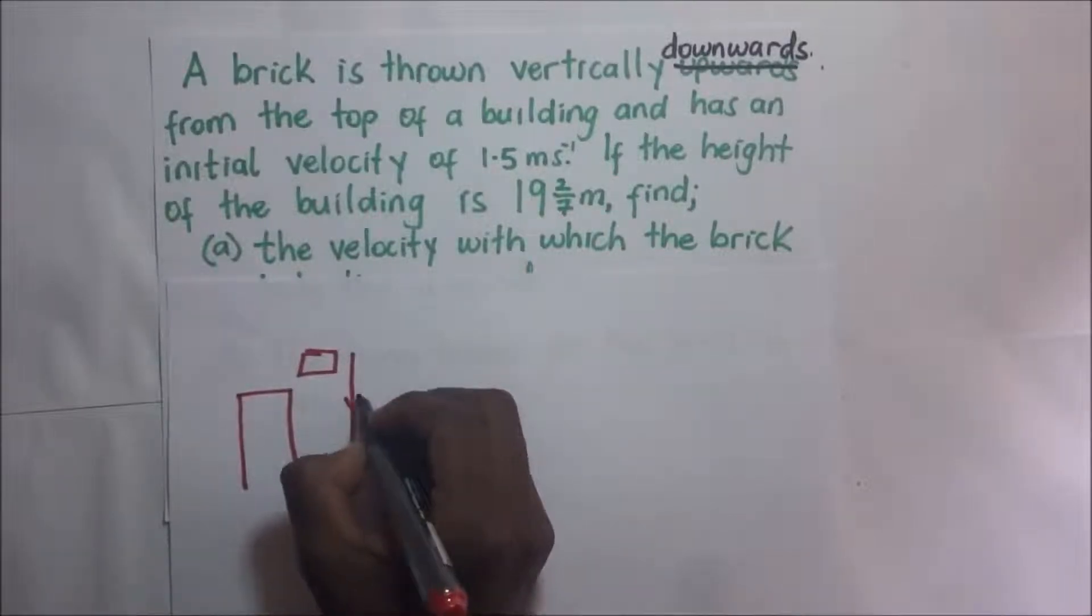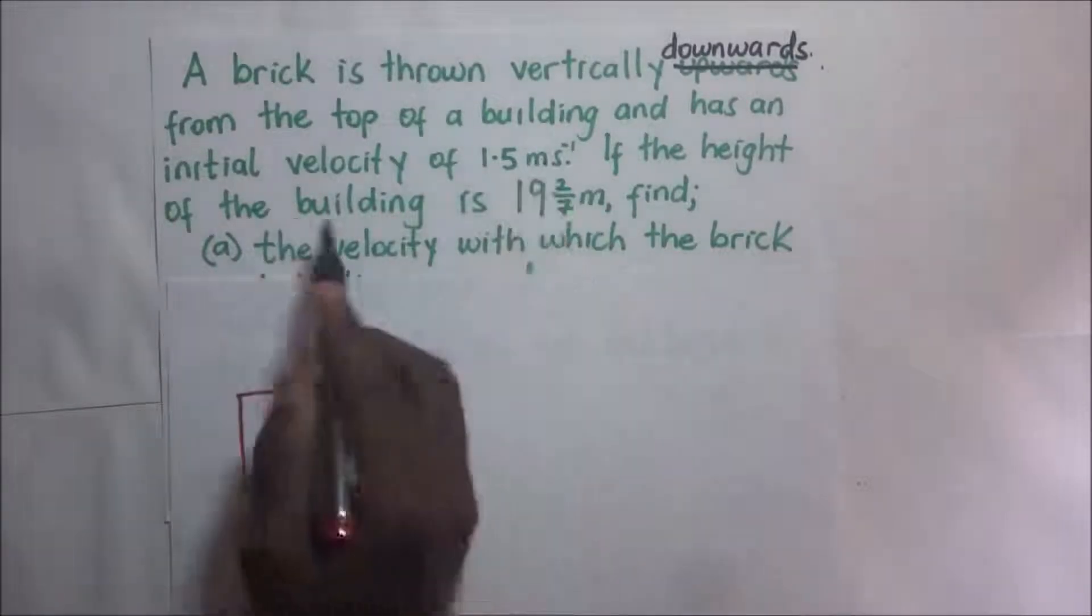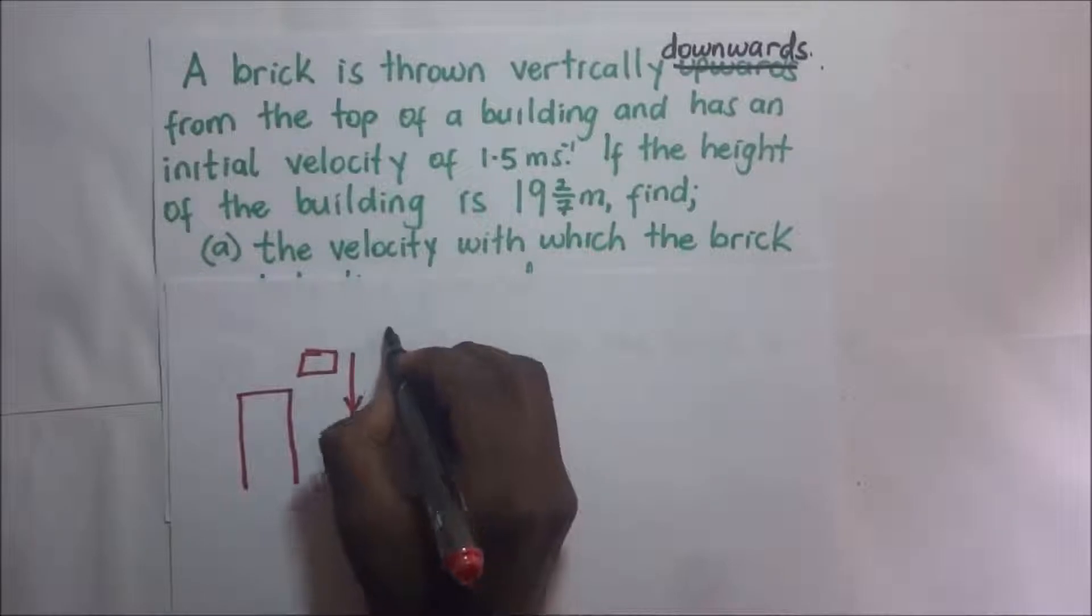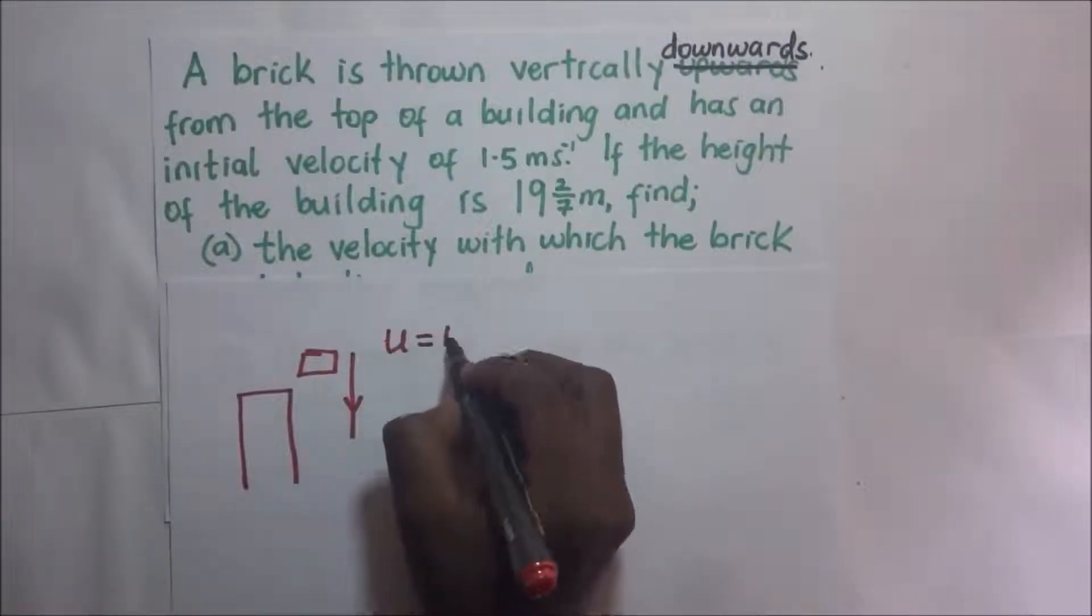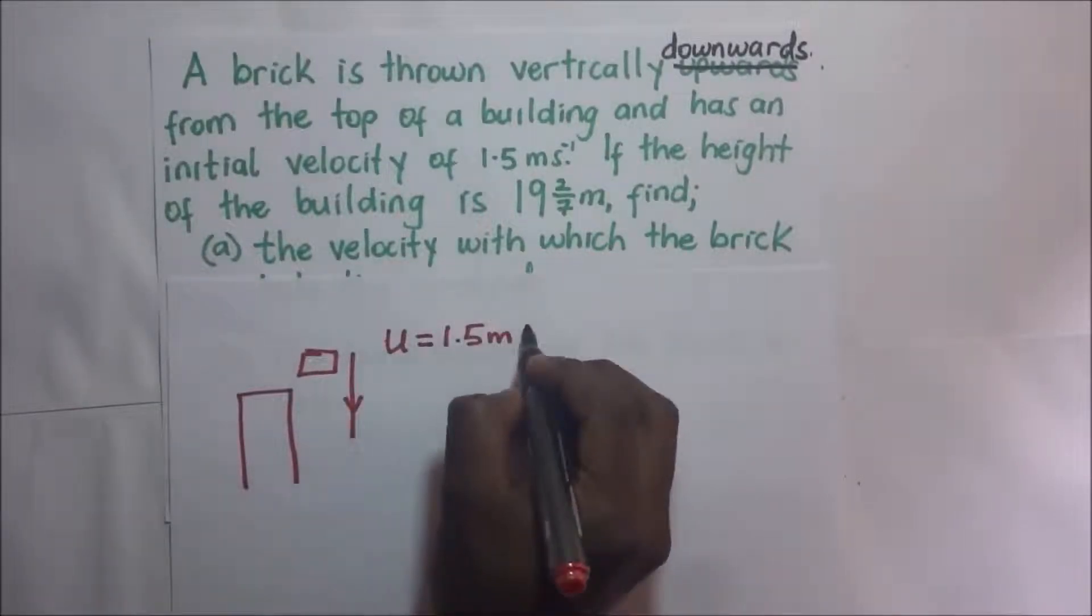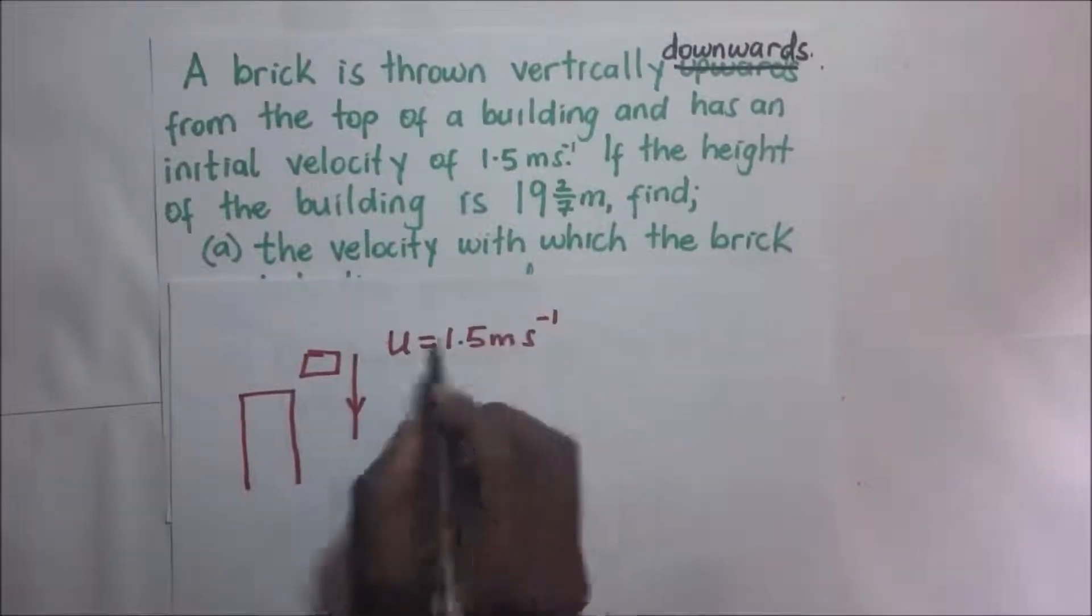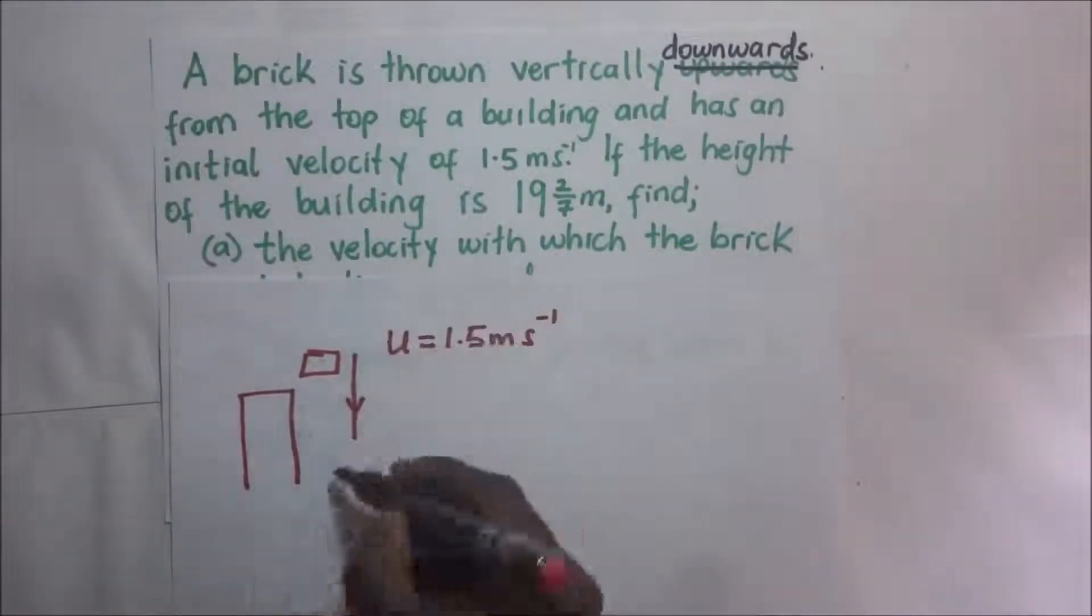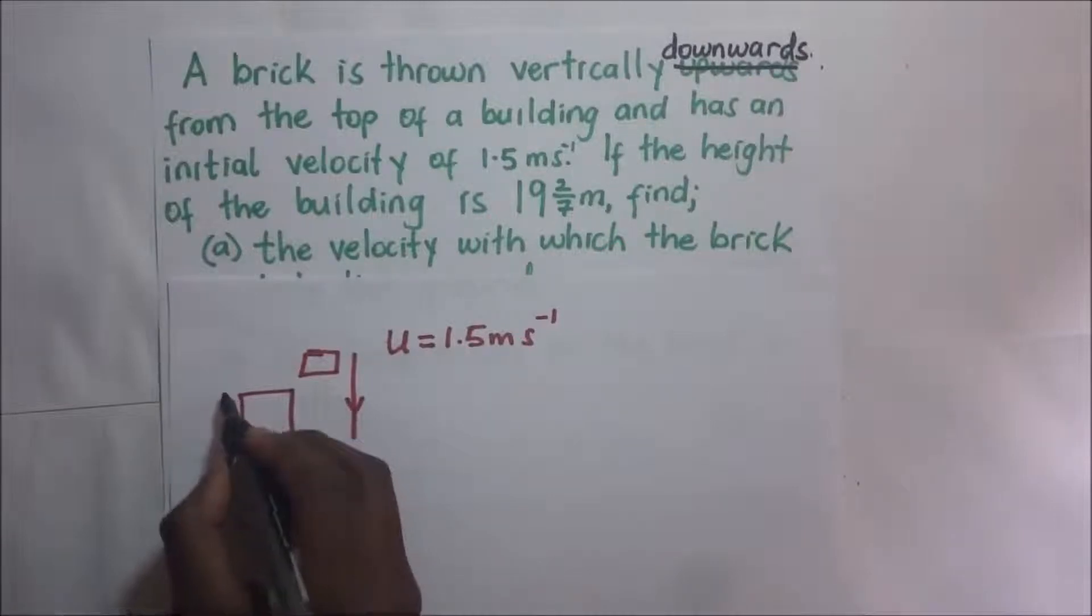It's thrown vertically downwards from the top of the building and it has an initial velocity of 1.5 meters per second. If the height of the building is that, so meaning that as it's moving down, the height of this building